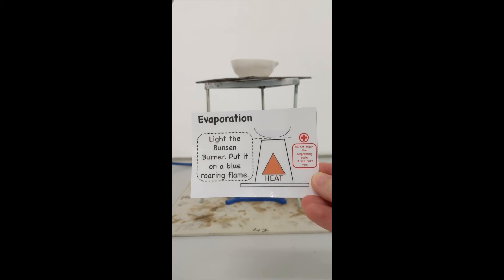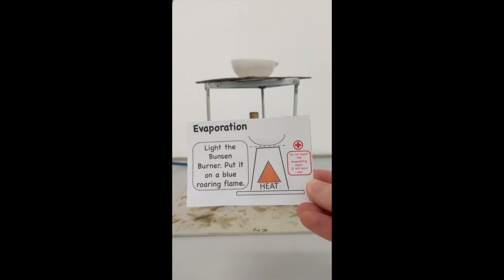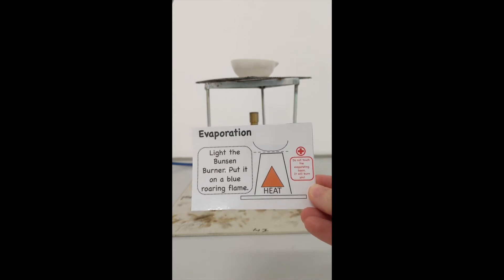Now I'm going to light the Bunsen burner and then turn it onto a blue roaring flame by opening the air hole.